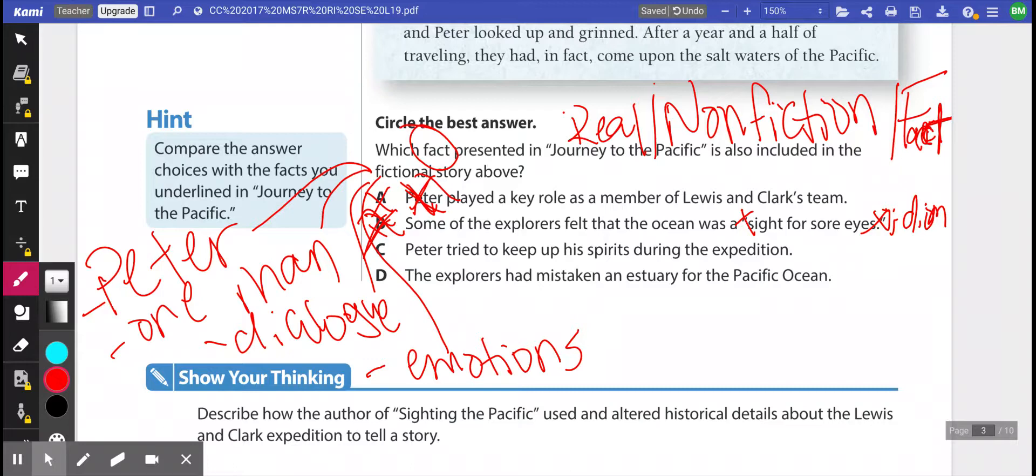C says Peter tried to keep his spirits up during the expedition. Well, there we go again. Again, we got Peter. Plus we got emotions. And both of those things we're cutting out because that was not in our original historical account.